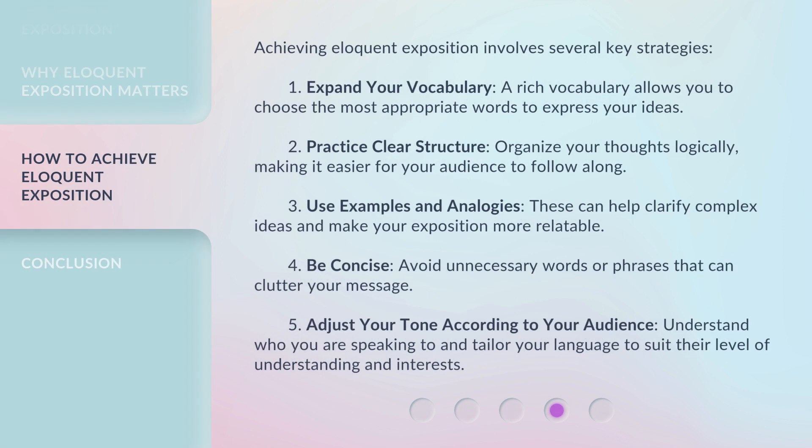Achieving eloquent exposition involves several key strategies. First, expand your vocabulary — a rich vocabulary allows you to choose the most appropriate words. Second, practice clear structure — organize your thoughts logically, making it easier for your audience to follow along. Third, use examples and analogies to clarify complex ideas and make your exposition more relatable. Fourth, be concise — avoid unnecessary words or phrases that clutter your message. Fifth, adjust your tone according to your audience — understand who you are speaking to and tailor your language to suit their level of understanding and interests.